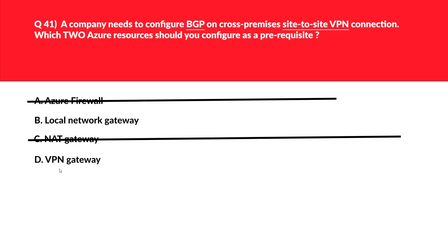Let's look at option D, that is VPN gateway. VPN gateway looks like another possible answer because we need to connect with the local network gateway.